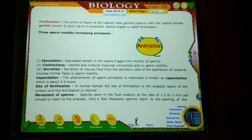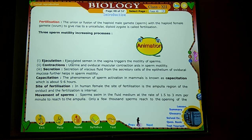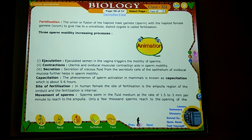First of all, ejaculation — ejaculated semen in the vagina triggers the motility of sperm. Then contraction — uterine and oviductal muscle contraction aids in sperm motility.